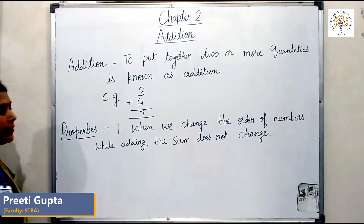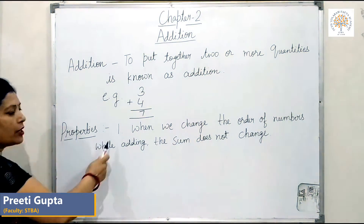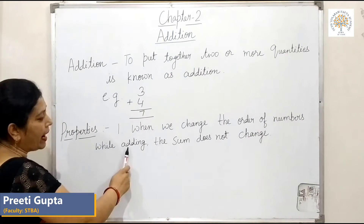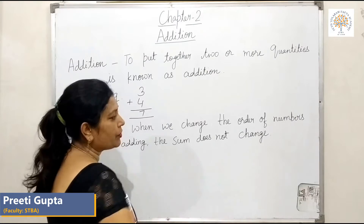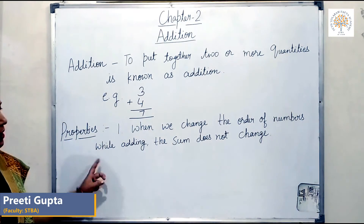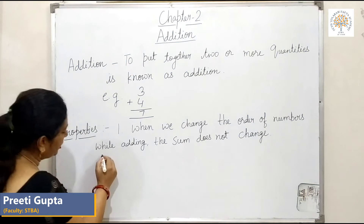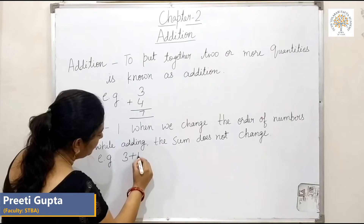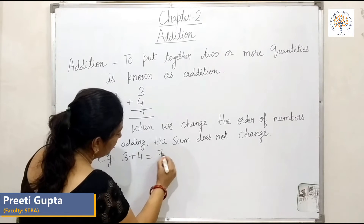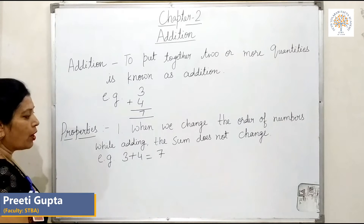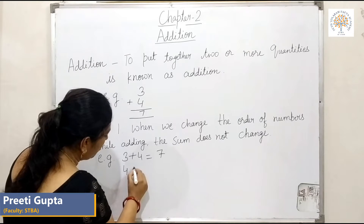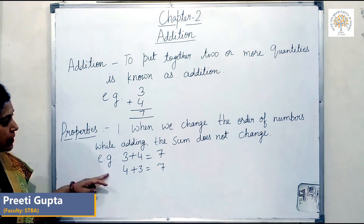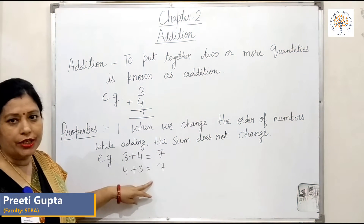Now we discuss about the properties of addition. The first property is that when we change the order of numbers while adding, the sum does not change. For example, 3 plus 4 is equal to 7. Now we reverse it — 4 plus 3 is also 7. So students, the sum does not change.